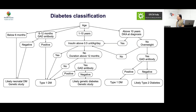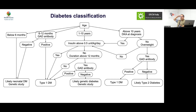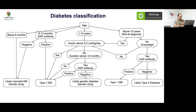To conclude, here is the classification algorithm. If less than 6 months of age, consider neonatal diabetes. Between 6 to 12 months with GAD negative, also consider neonatal. Between 1 to 10 years, mainly type 1 — unless insulin requirement is below 0.5 units/kg/day for 1 year, then do a GAD antibody; if GAD is negative, proceed to genetic testing. At 10 years and above, assess for DKA: if DKA present, revert to the 1–10 year protocol. Above 10 years without DKA — if overweight, do a GAD antibody to identify type 2; if lean, wait at least 1 year. This algorithm helps achieve the right diagnosis.